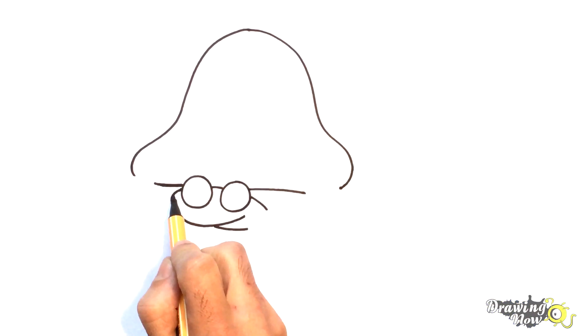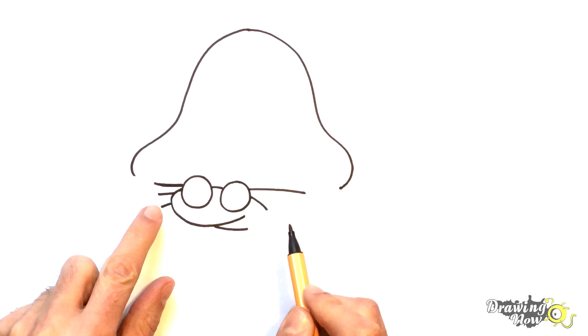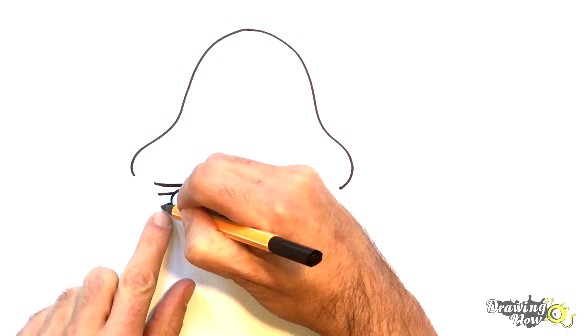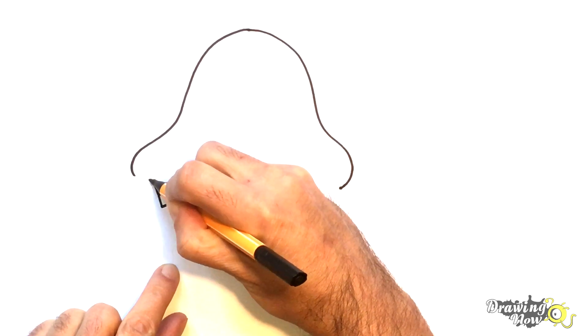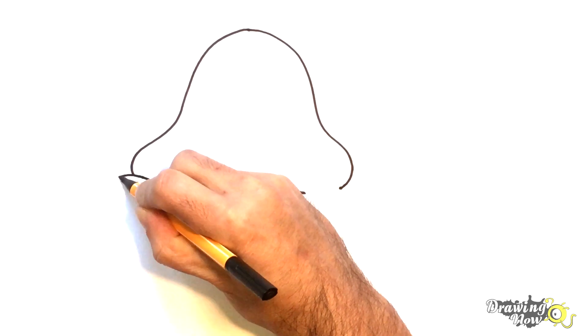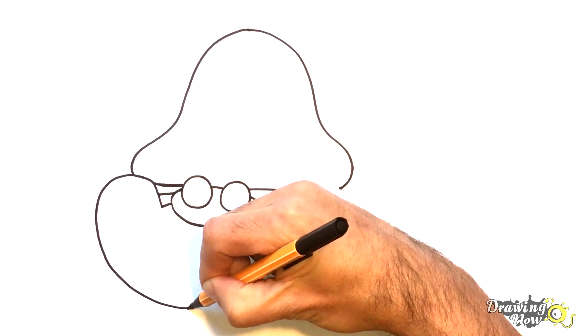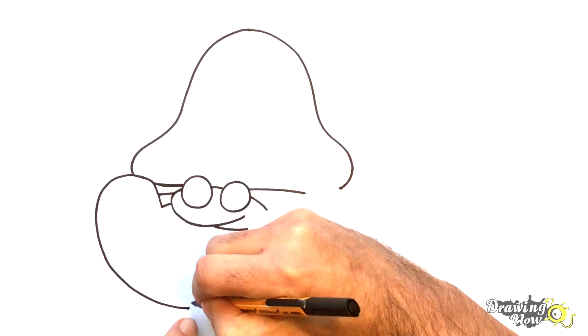For the claw, we do the arm first. We do two lines, one, two. This is the arm to the claw. We will have that on the other side too but differently because of the angle. Start here, go up, do the circle here, close.